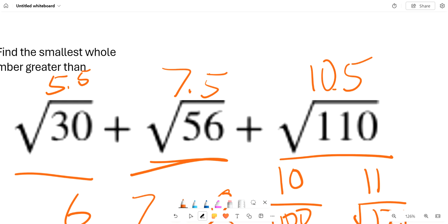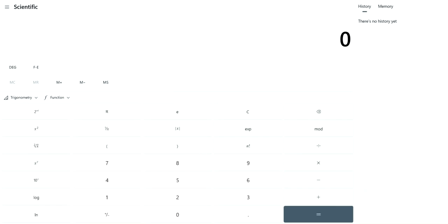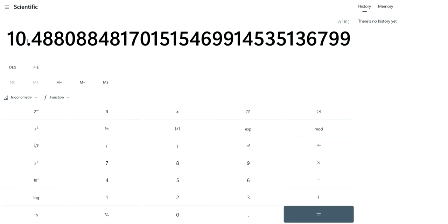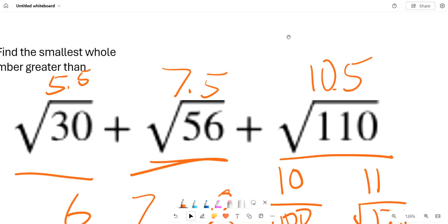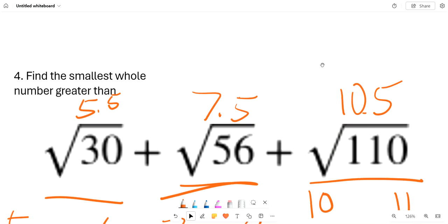You can also check these on the calculator, but it's not allowed. So anyway, we can just check, for example, square root 110 is about 10.5. So we can assume all of these are correct.